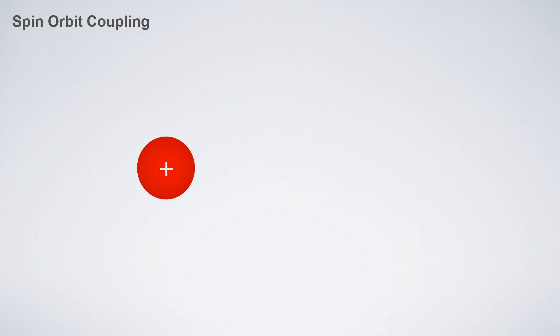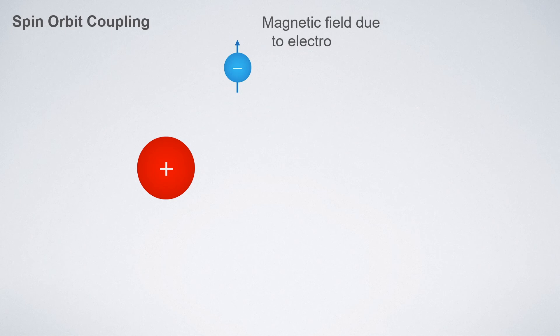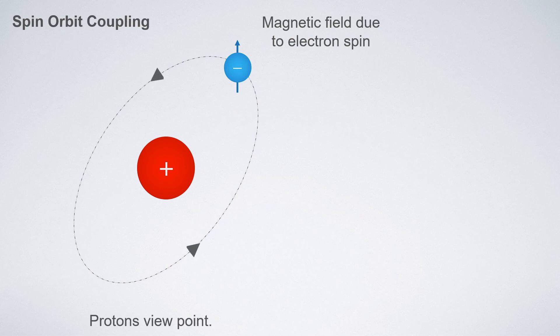As the name suggests, spin-orbital coupling is the coupling or interaction between spin and orbital motion of an electron. Spin is the rotation of an electron around its own axis, and this rotation produces a magnetic field, as shown here with the blue line.